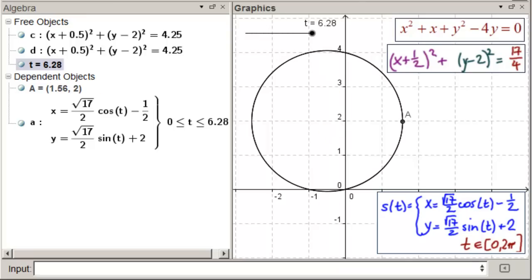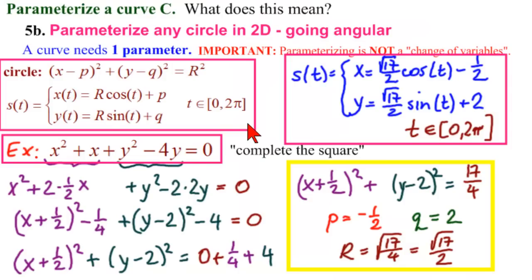So, these are our formulas. We should write them down in a single place so we can find them. And remember, r is a number. p and q are numbers. The parameter is t.